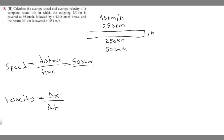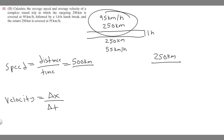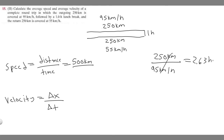Let's find how long each leg took. The outbound trip is at 95 kilometers per hour, and the return is at 55, so the outbound took less time. To find the outbound time, take 250 kilometers divided by 95 kilometers per hour — the units cancel and give you hours. 250 divided by 95 equals 2.63 hours.